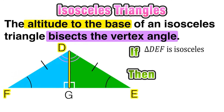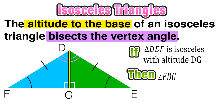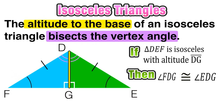So if triangle DEF is isosceles with altitude DG, then our conclusion is that angle FDG is congruent to angle EDG — because that altitude bisects the vertex angle into two congruent pieces.